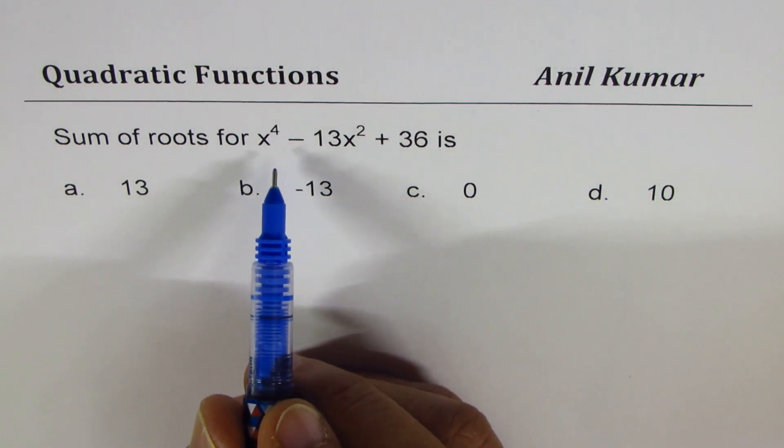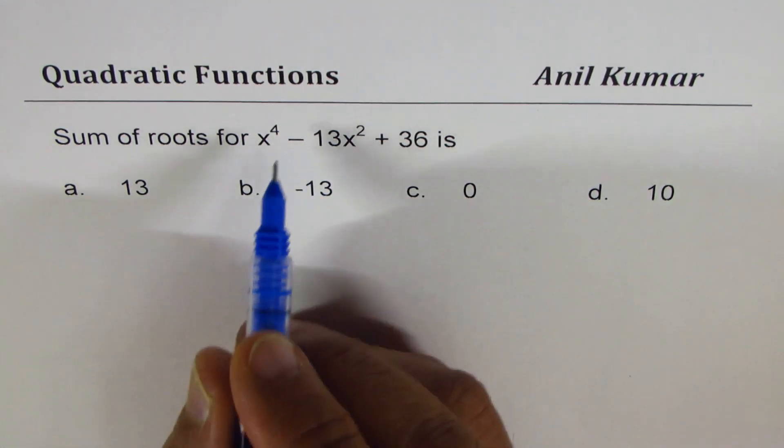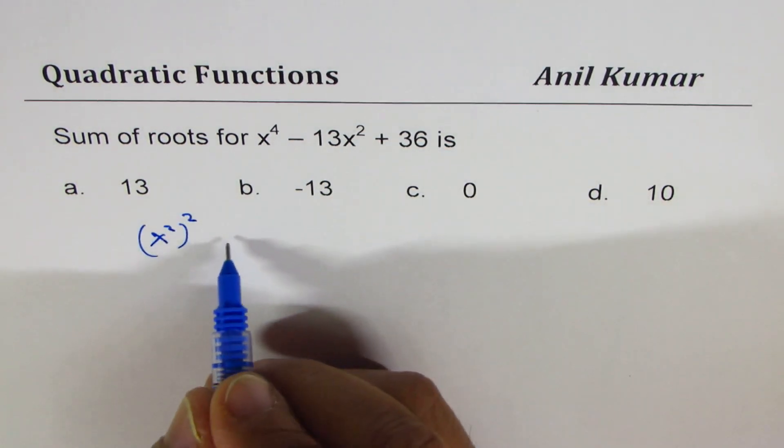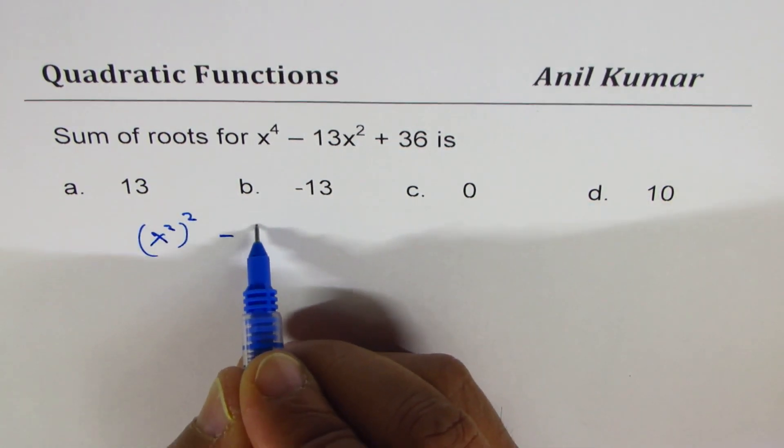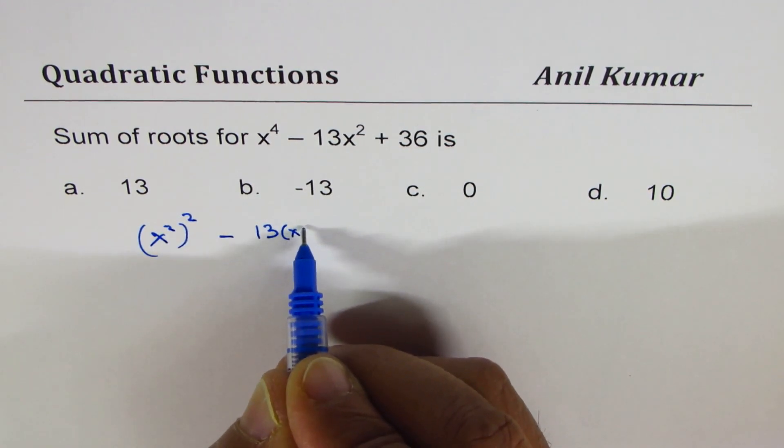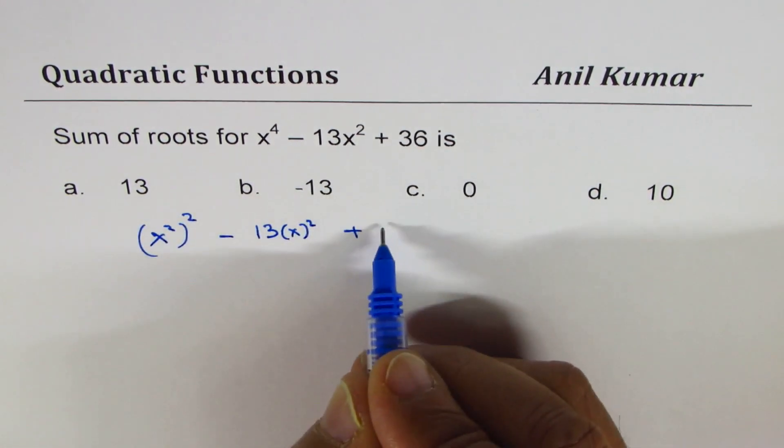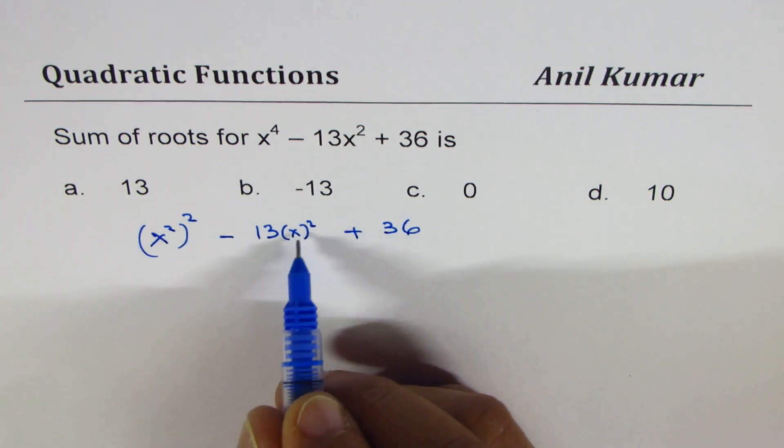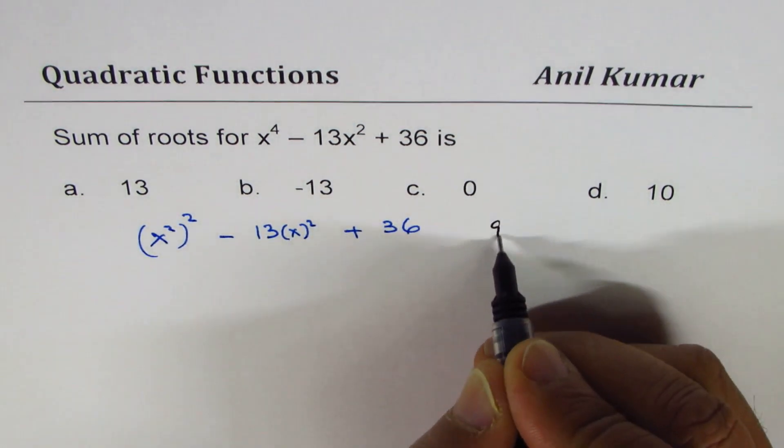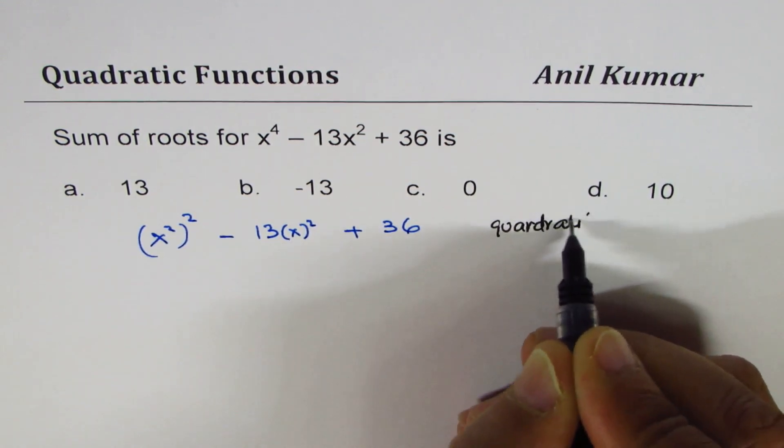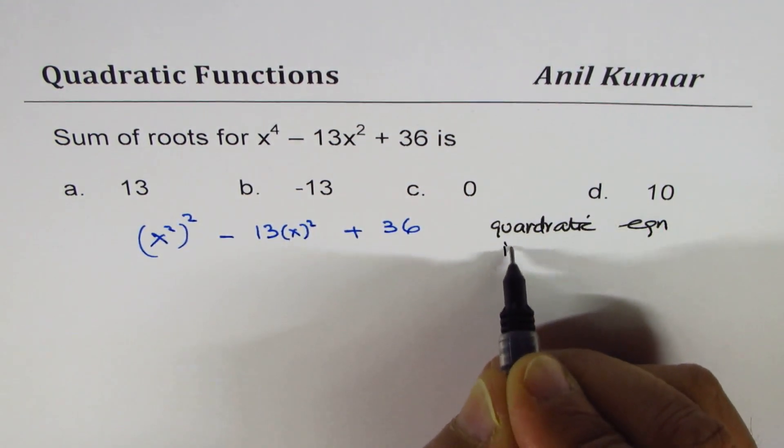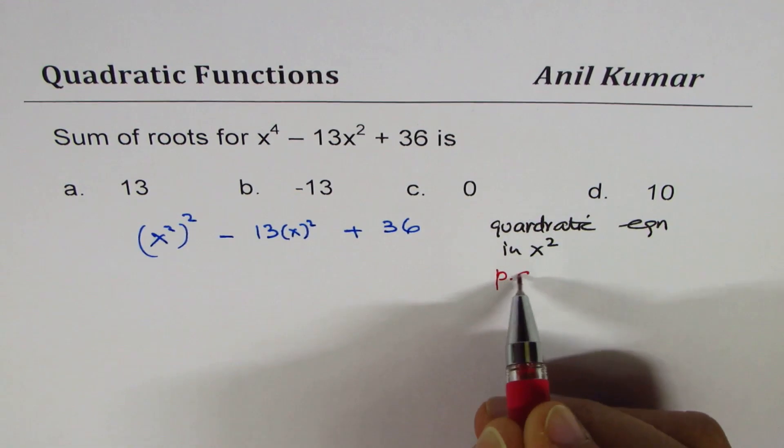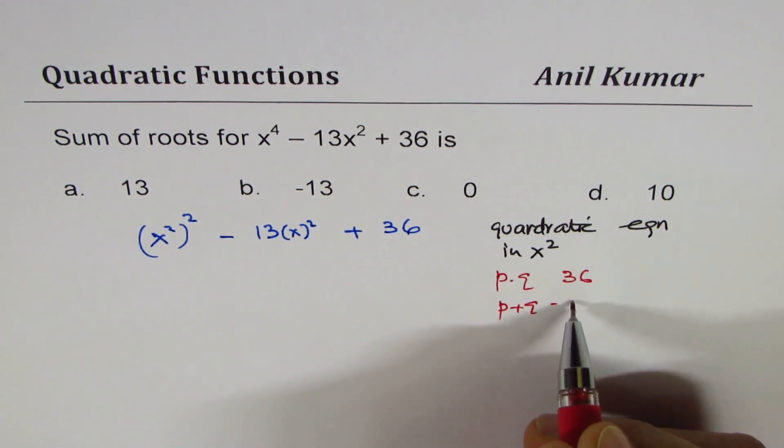Now for this one my suggestion is that factoring is better. So you could think about this equation as x squared whole squared. We are writing in quadratic form minus 13 so we are writing it in the terms of x squared okay plus 36. So what we have here is we have a quadratic equation in x squared. Do you see that x squared? So treat this as a quadratic equation in x squared. So we will go for product and sum. We are looking for product of two numbers to be 36 and sum to be minus 13.